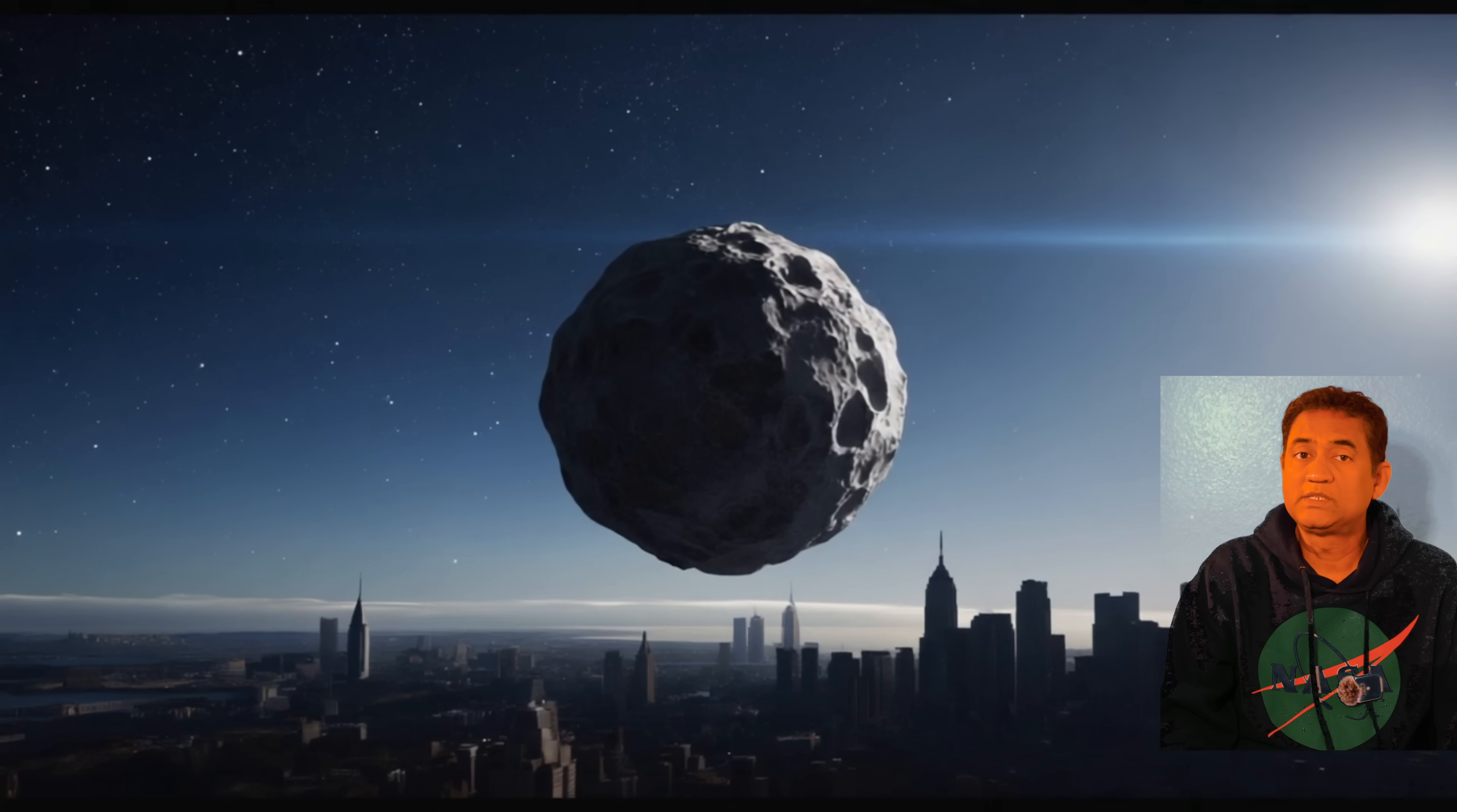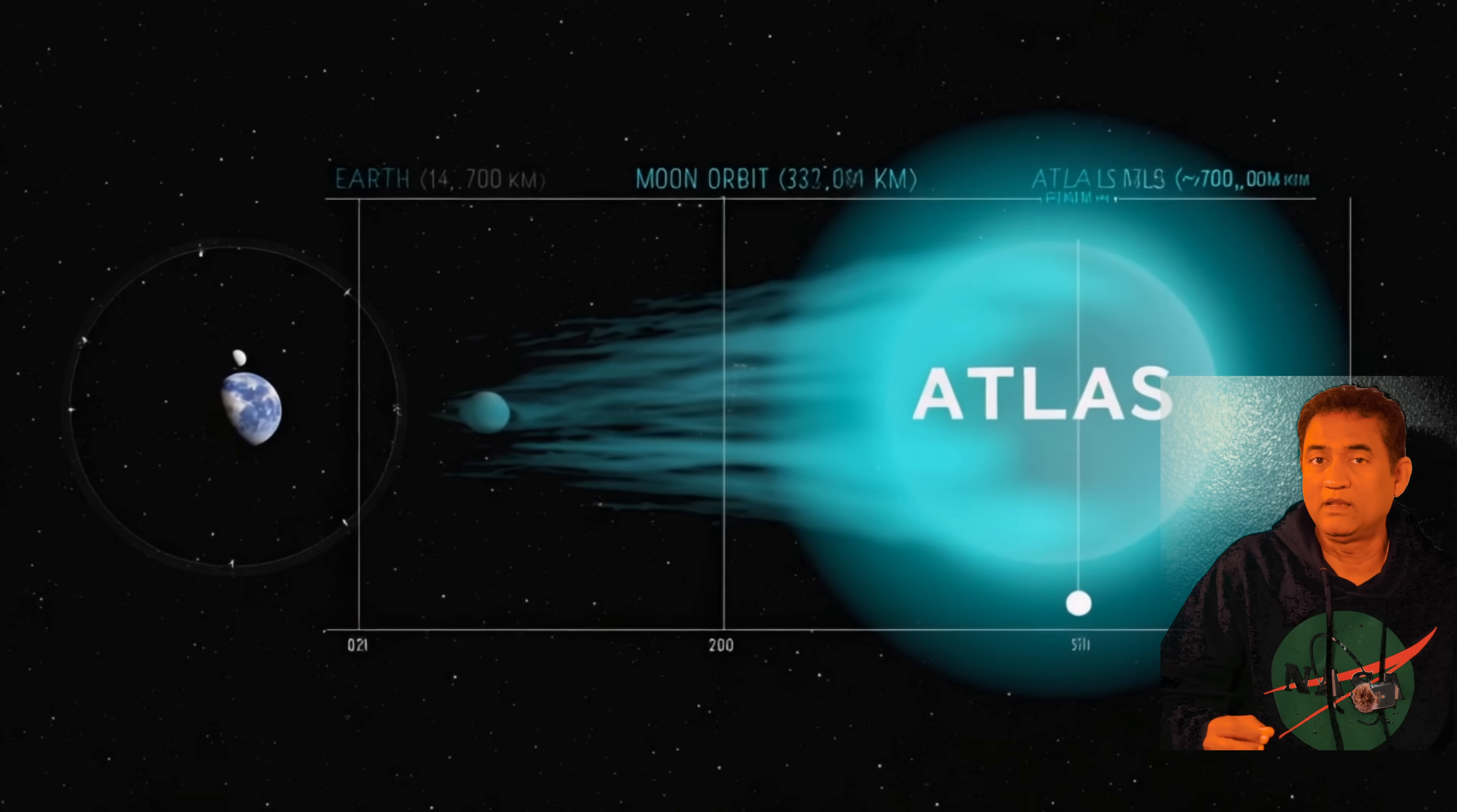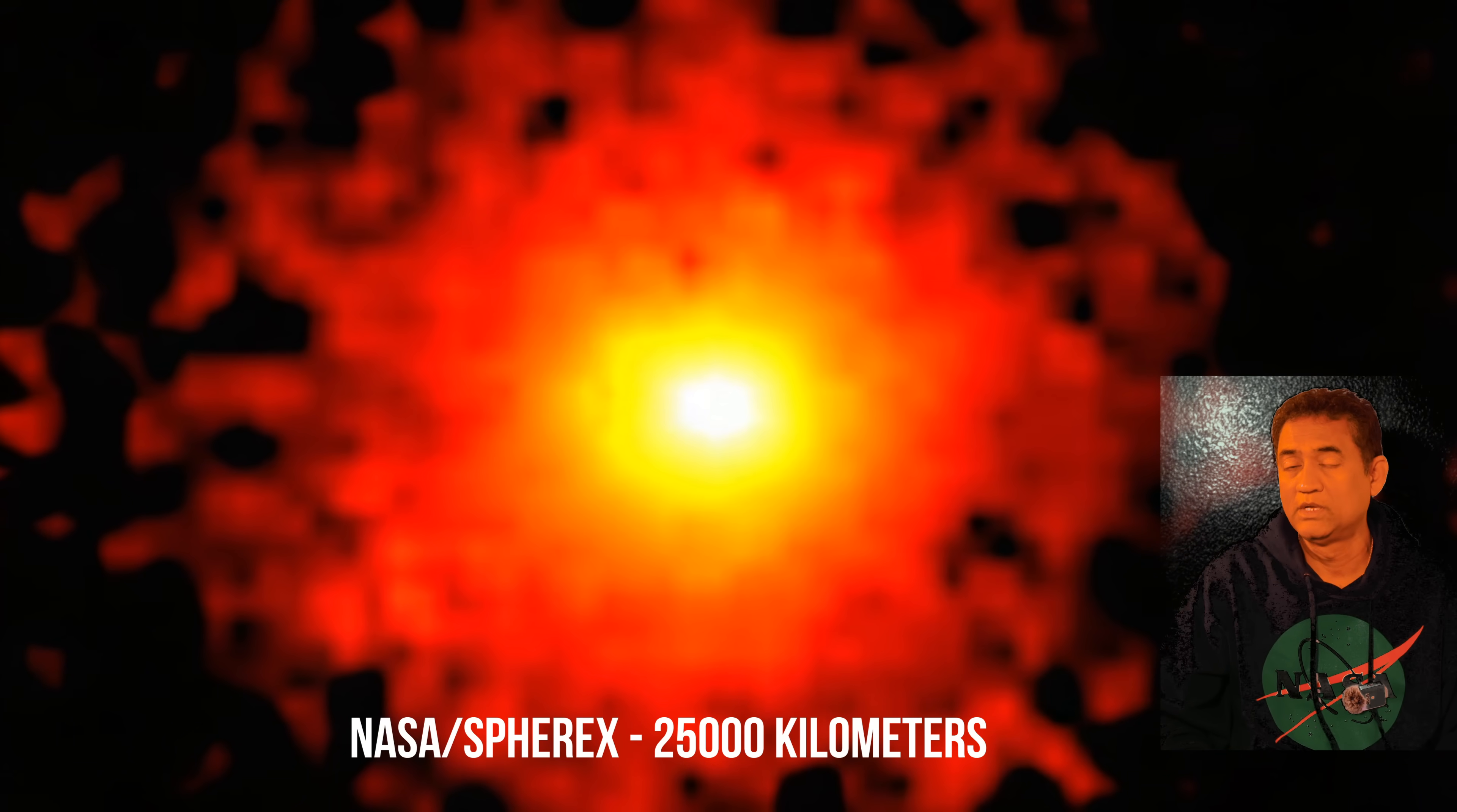Let's talk about its size. The nucleus, the solid heart of the comet, is still a mystery, but Hubble telescope measured it somewhere in the vicinity of 5.6 kilometers. What's truly staggering is the coma of this comet. It's a glowing envelope, the gas and dust around the nucleus. The visible light coma is about 25,000 kilometers across.